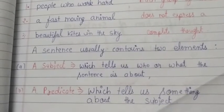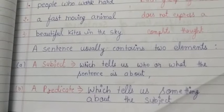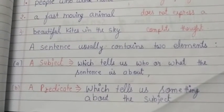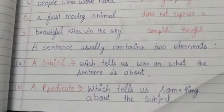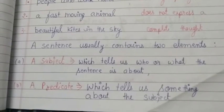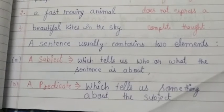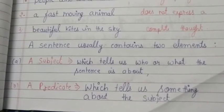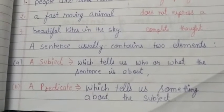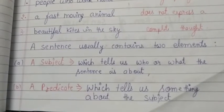Now we will understand a predicate. A predicate is something which tells us something about the subject. For example, 'Ram is a good boy' — 'is a good boy' will be the predicate of the sentence because it is telling us something about the subject, Ram. So a subject tells us who or what the sentence is about, and a predicate tells us something about the subject.